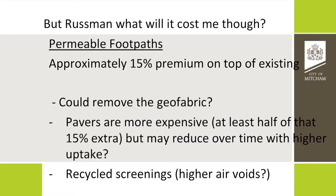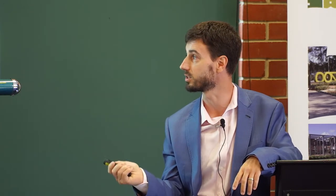If every council in the state started doing 10,000 square metres of permeable pavers, maybe that would be cheaper too. We also tried working with the contractor on using recycled screenings. We thought it would be a better news story if we could use recycled product and take it out of the waste stream. Our normal 10mm screenings had about 40–45% air voids, and we were getting about 50–55% air voids in the recycled screenings — and those air voids are what holds the water, so you could theoretically get more storage under each footpath.